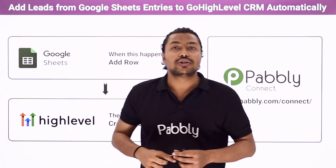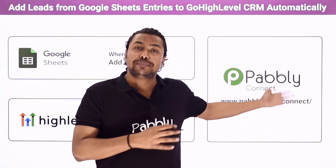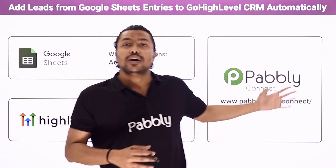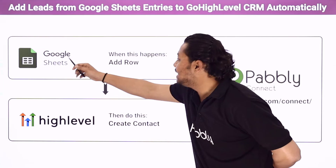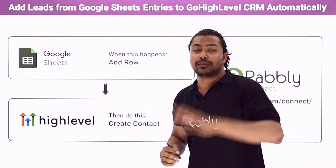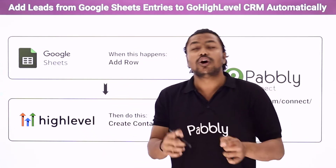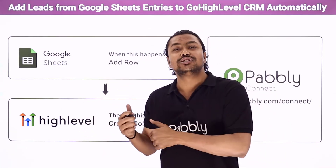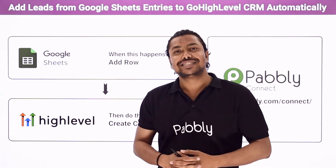To do this automation, we are going to use an integration and automation service called Pabbly Connect, which will help us connect Google Sheets and GoHighLevel CRM automatically. If you want to learn how to do this automation, follow along with me on screen.